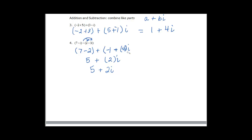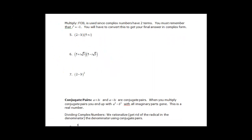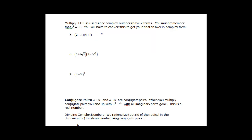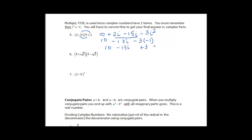When we multiply, it's basically just doing FOIL, but we need to remember that i squared equals negative 1, so we won't have an i² term when we're done. 2 times 5 is 10, 2 times i is plus 2i, negative 3i times 5 is minus 15i, and negative 3i times i is minus 3i squared. Combining: 10 minus 13i, and minus 3 times negative 1 gives plus 3. So 10 plus 3 is 13, minus 13i.